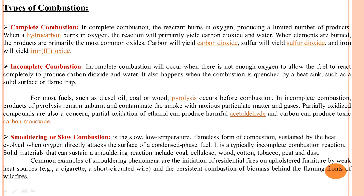Types of combustion include complete combustion, incomplete combustion, and slow or smoldering combustion. In complete combustion, the reactant burns in oxygen producing a limited number of products. When a hydrocarbon burns in oxygen, the primary products are carbon dioxide and water. Carbon yields carbon dioxide, sulfur yields sulfur dioxide, and iron yields iron oxide.